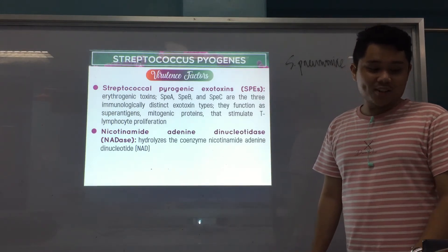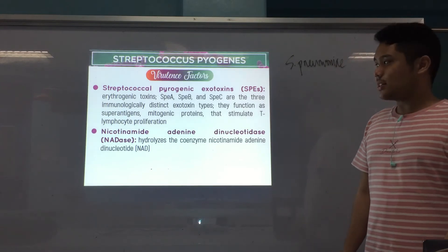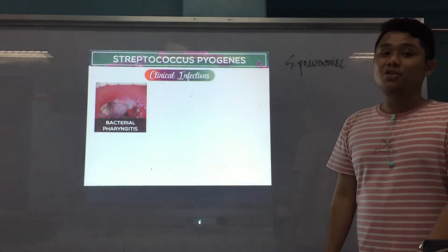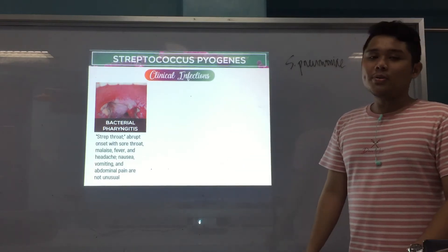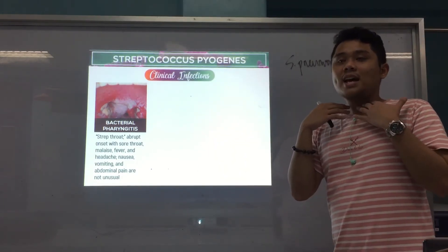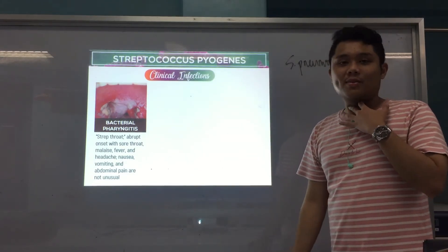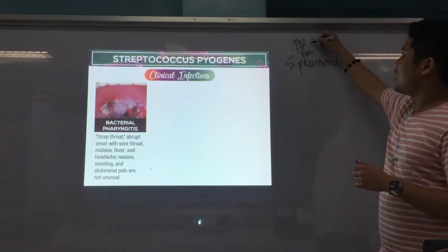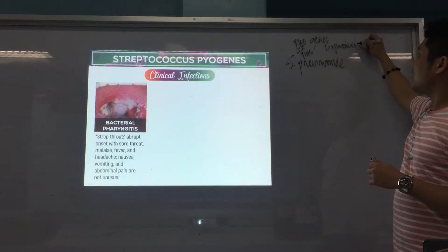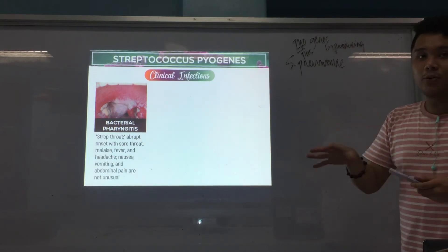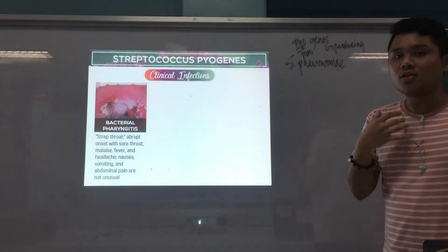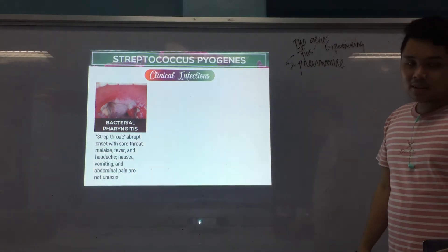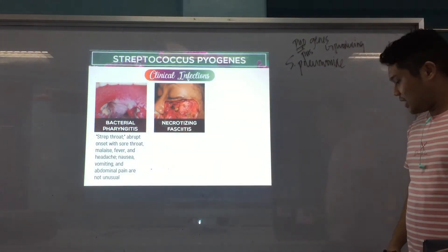Those are the virulence factors of Streptococcus pyogenes. Now we go to clinical infections. The most common is bacterial pharyngitis or strep throat — typically presenting with pus. The name 'pyogenes' means pus-producing (pyo = pus, genes = producing), so strep throat often presents with yellow pus-like exudate. Another disease is necrotizing fasciitis — an invasive infection causing inflammation and necrosis of the skin, fat, and fascia.